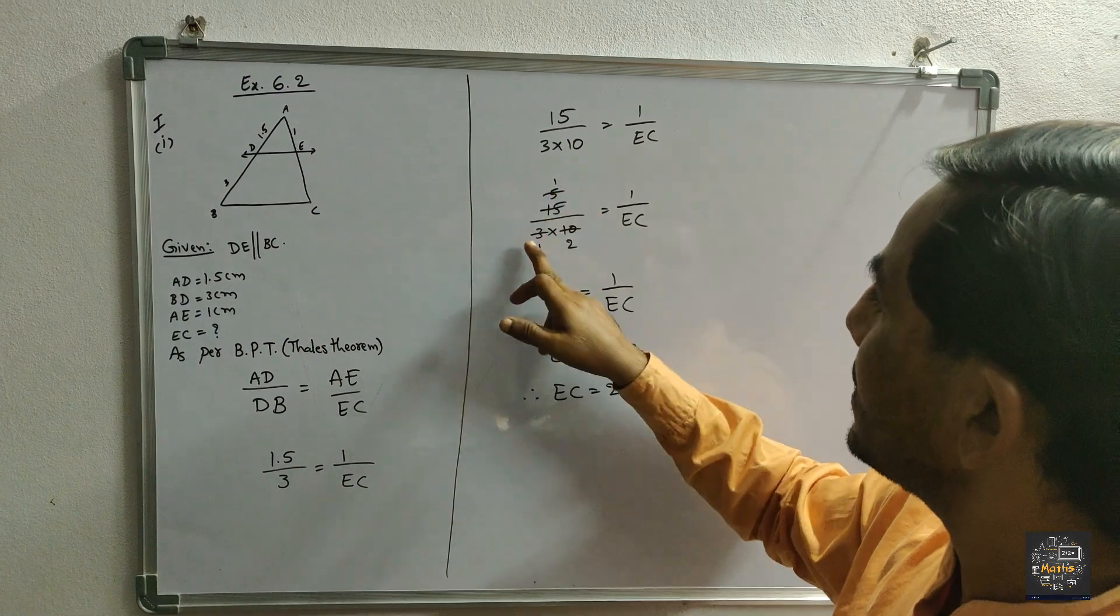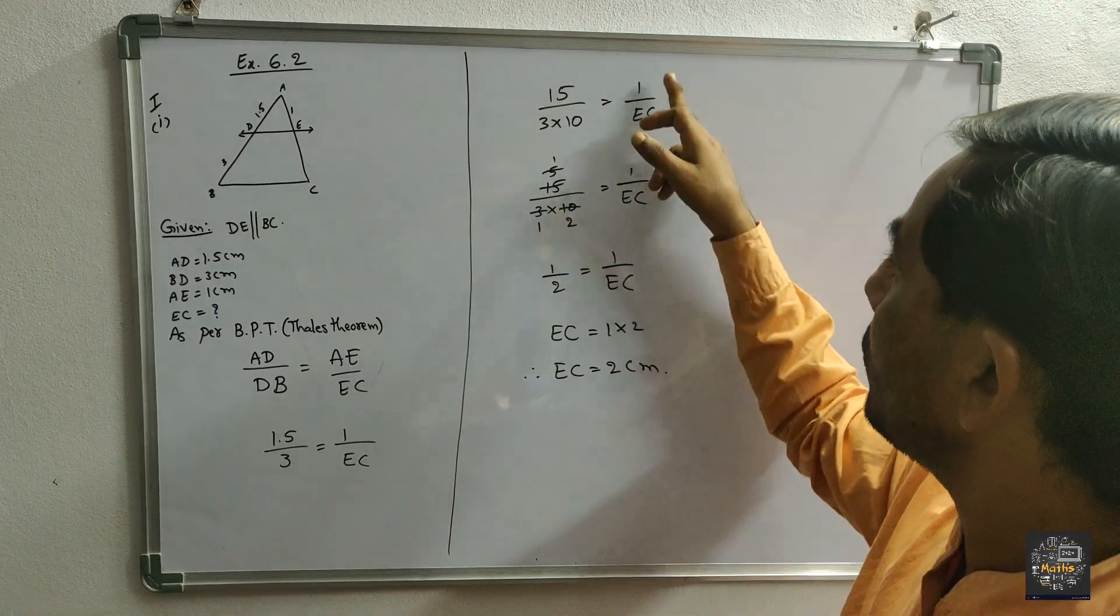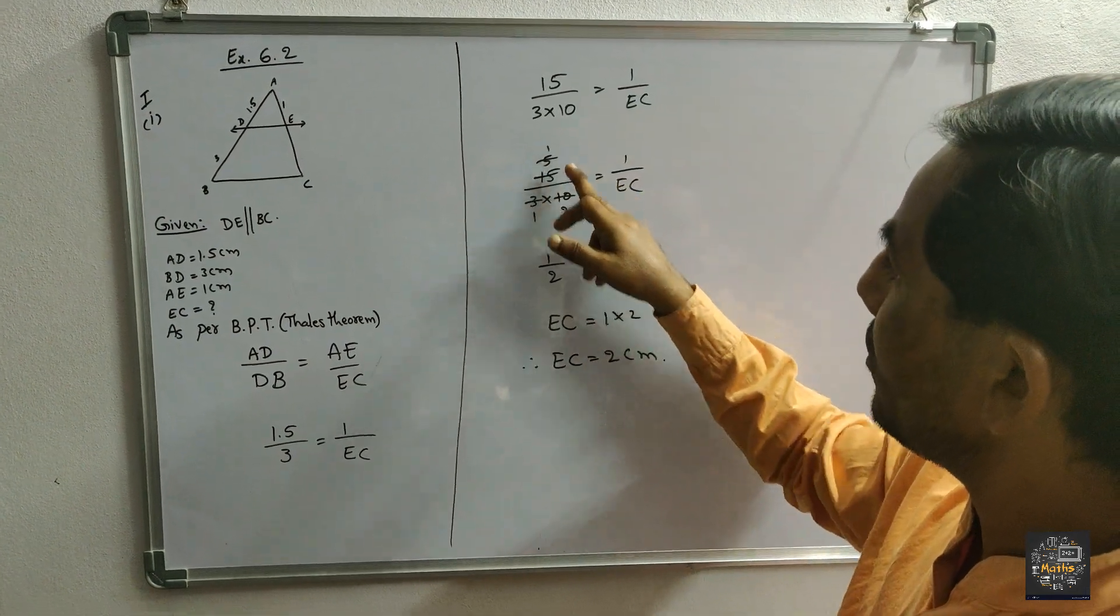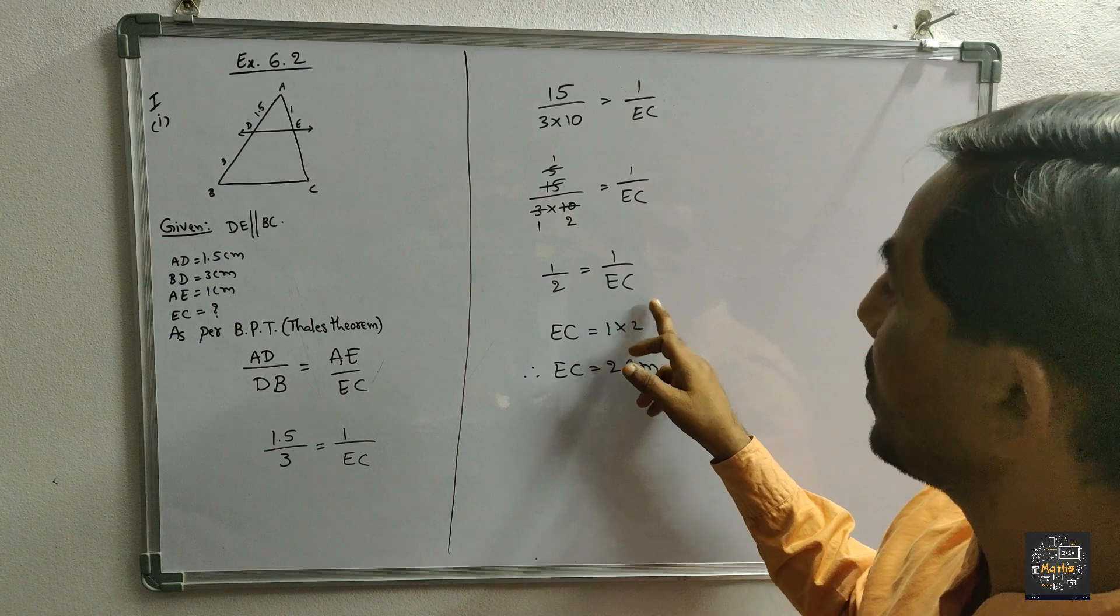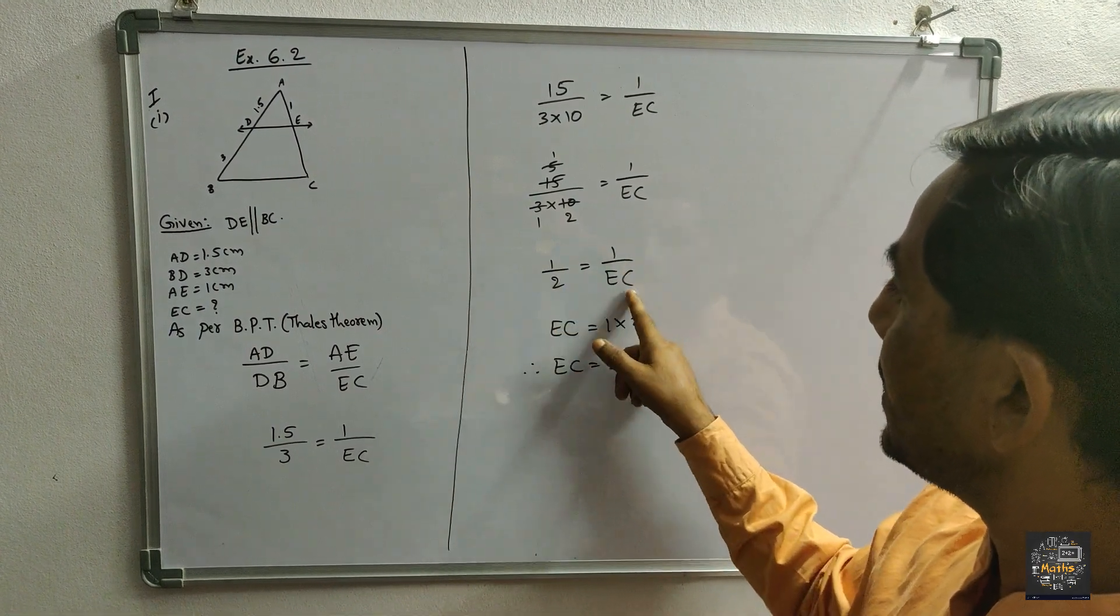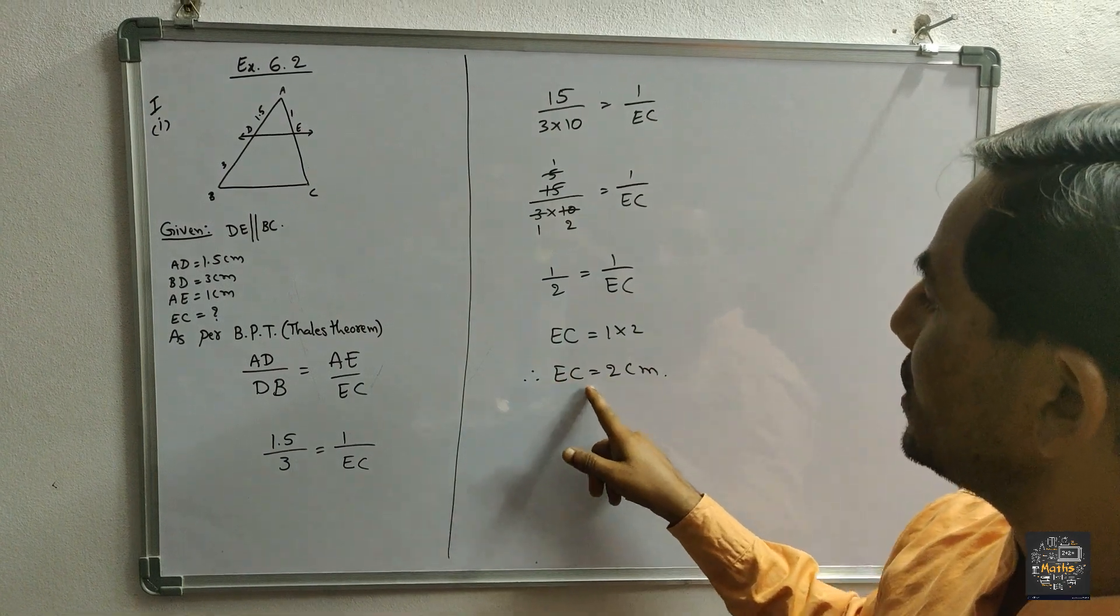After cancellation, 3 into 5 goes to 1, so 5 into 2 is equal to 1 by EC. Numerator 1 by 1 into 2 is 1 by 2 equals 1 by EC. Cross multiplication: EC into 1 means EC is equal to 1 into 2. Therefore EC is equal to 2 cm.